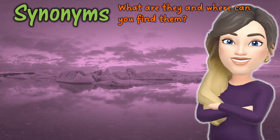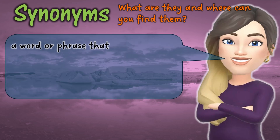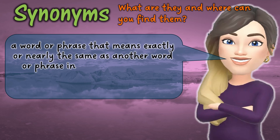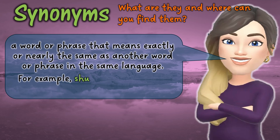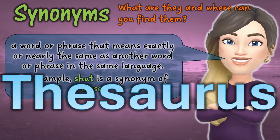In order to do this, you need to look for synonyms. But what are they and where can you find them? A synonym is a word or phrase that means exactly or nearly the same as another word or phrase in the same language — for example, 'shut' is a synonym of 'close'. We find synonyms in a thesaurus, which looks just like a dictionary but rather than definitions, it contains synonyms of each word.